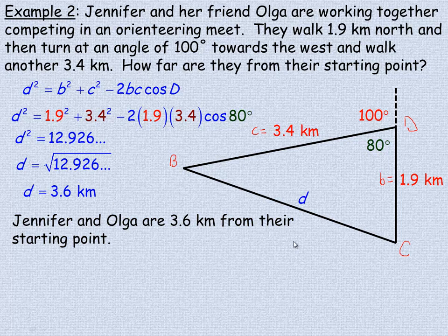So they're about 3.6 kilometers from where they started. If they walk in the right direction, 3.6 kilometers they would get back to where they started. That's the end of the lesson.